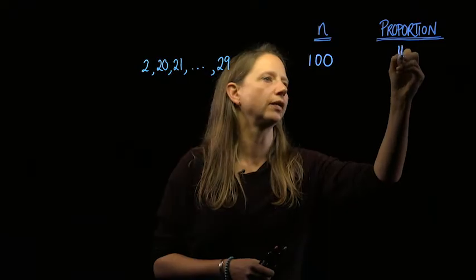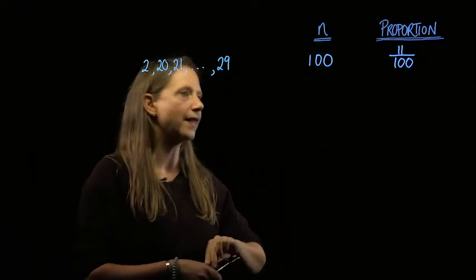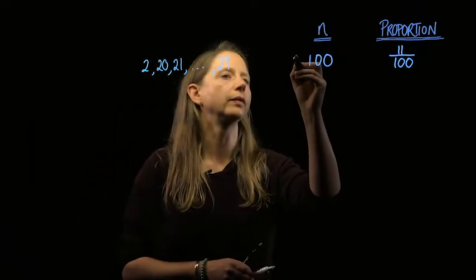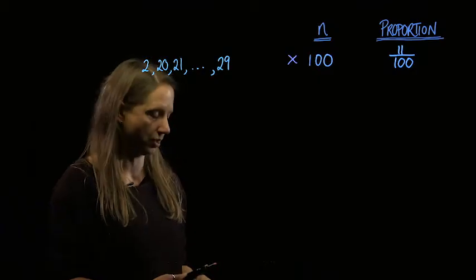And so the proportion out of all of the houses is 11 out of 100, and that is not going to give us a fraction of 1 over k. So 100 is not a value of n that we can use.